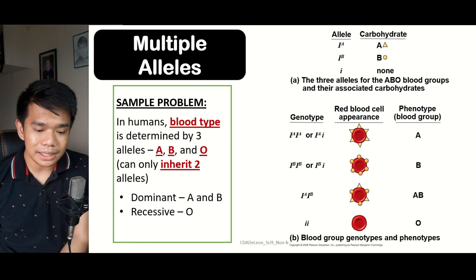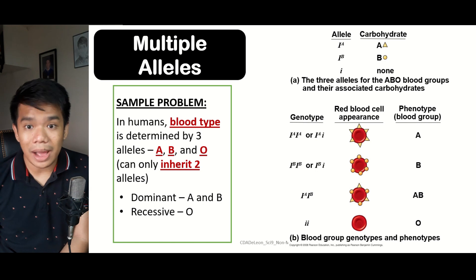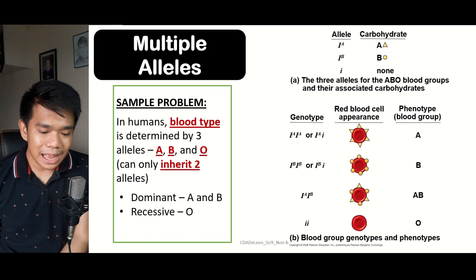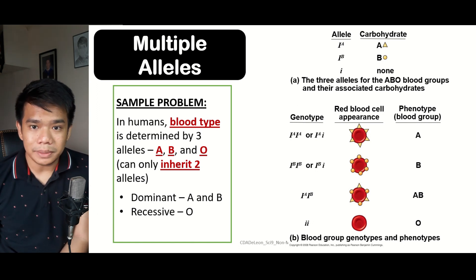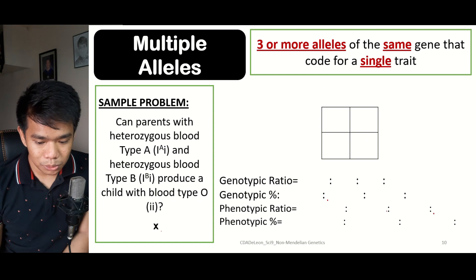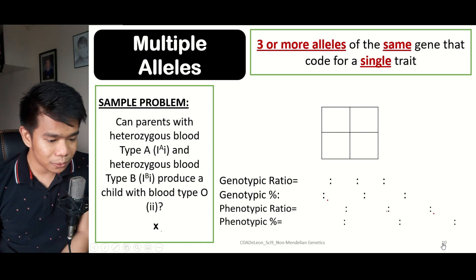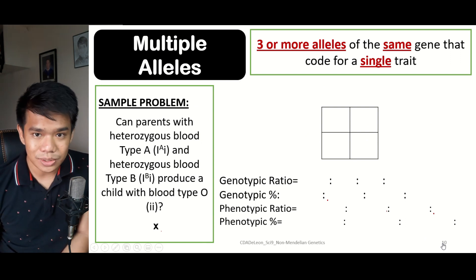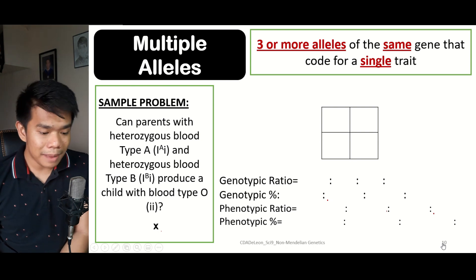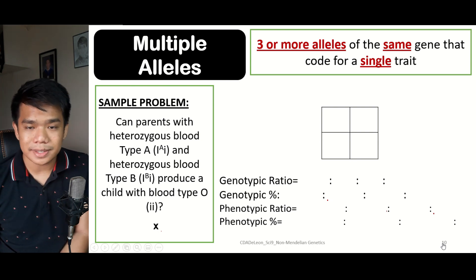For blood types A and B, it can be either homozygous or heterozygous. Heterozygous means a combination of both antigen and no antigen — for example, capital IA and small i. If both alleles are the same, that is homozygous. What will happen if there is a cross between a heterozygous blood type A and type B? Is there a probability of having an offspring with blood type O, represented by two small letter i's?